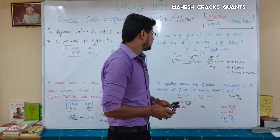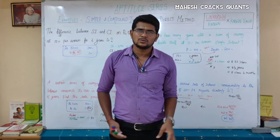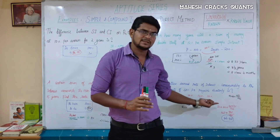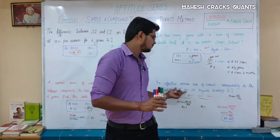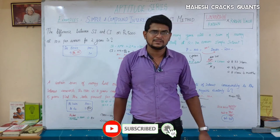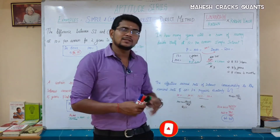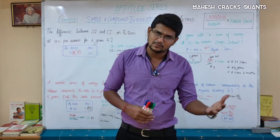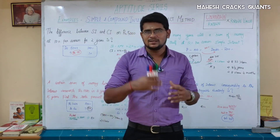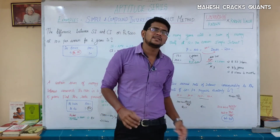The effective annual rate of interest is 46.41%. This proves that although the nominal rate is 40% per annum, compounding quarterly gives an effective rate of 46.41%.